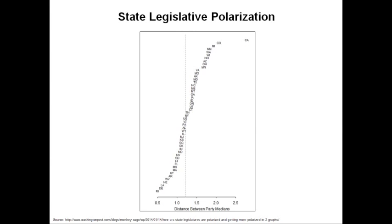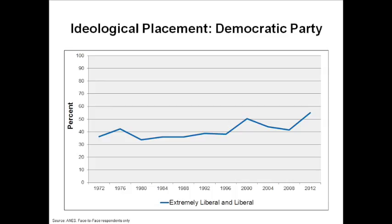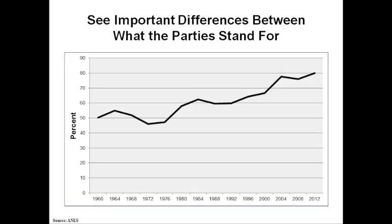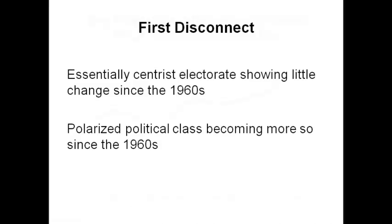The population as a whole sees what's developing. They are gradually placing the Democrats as more liberal and, even more so, placing the Republicans as more conservative. As a result, people see big differences between the parties now. Back in the 1960s when George Wallace was saying there's not a dime's worth of difference between the parties, only about half the population thought there was any difference between Democrats and Republicans. It's now pushing close to 80% during the Bush-Obama period. So the population sees what's going on. We have essentially a centrist electorate that's shown little change since the 60s, and increasingly they're being asked to choose between alternatives offered by a polarized political class, which is becoming even more polarized over time.